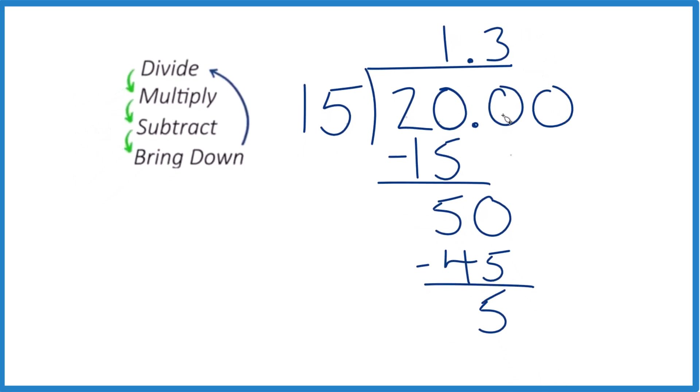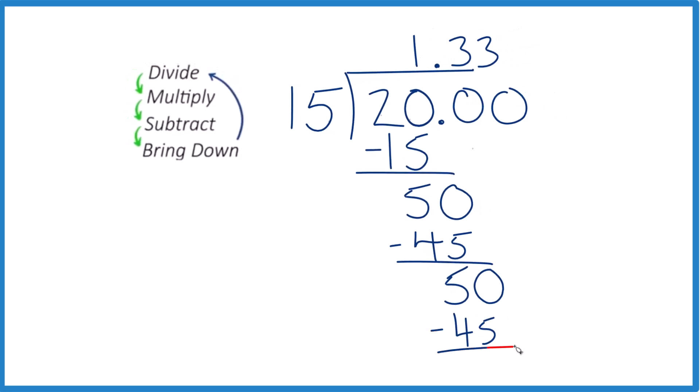Again, we could call this 20.00. We just need to move over a place here, bring our 0 down, and 3 times 15 is 45. And you can see what's happened. We're caught in a loop. We're going to get 5 again. And this 3 will just keep going.